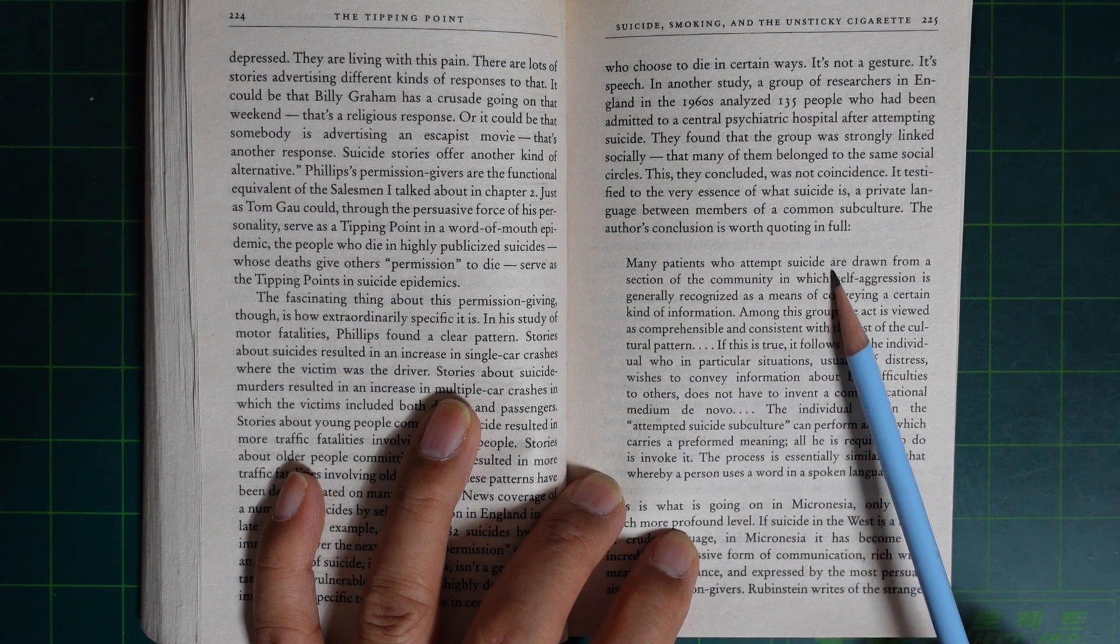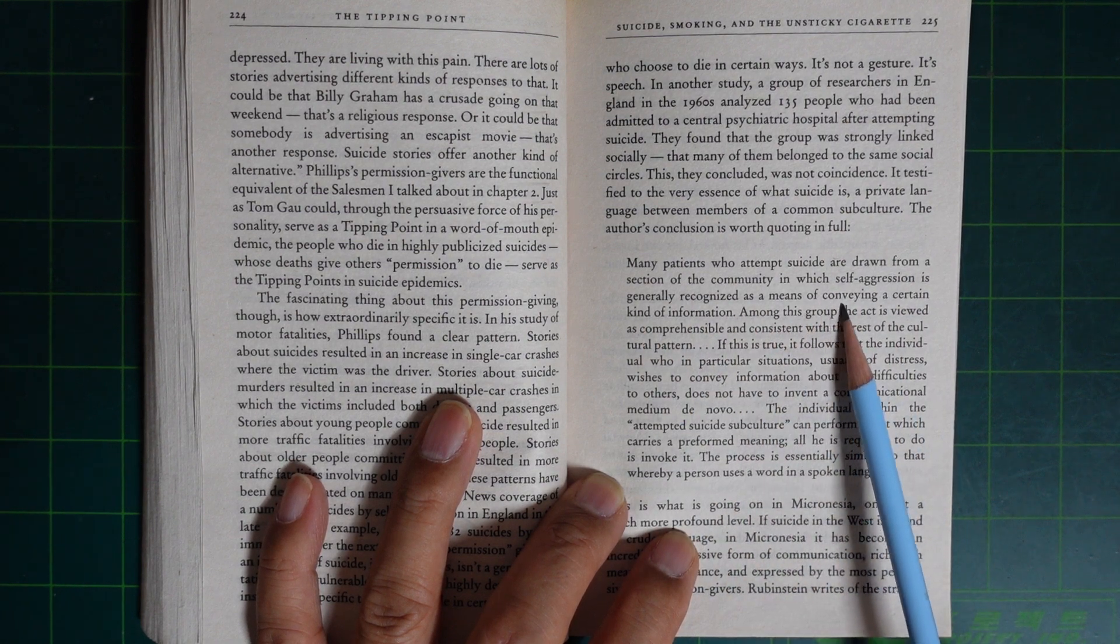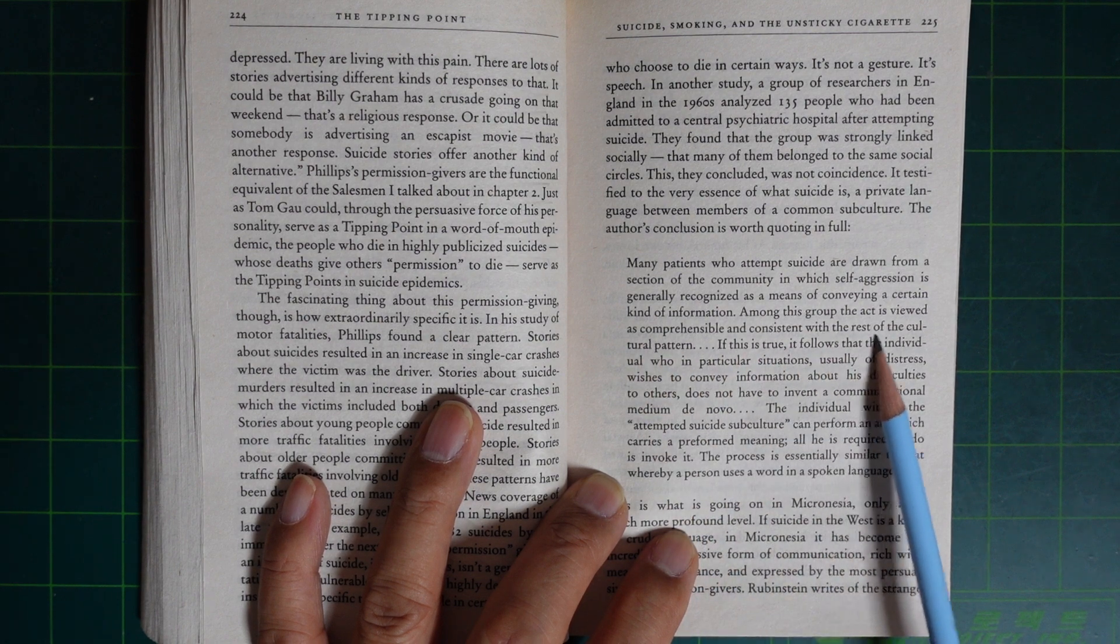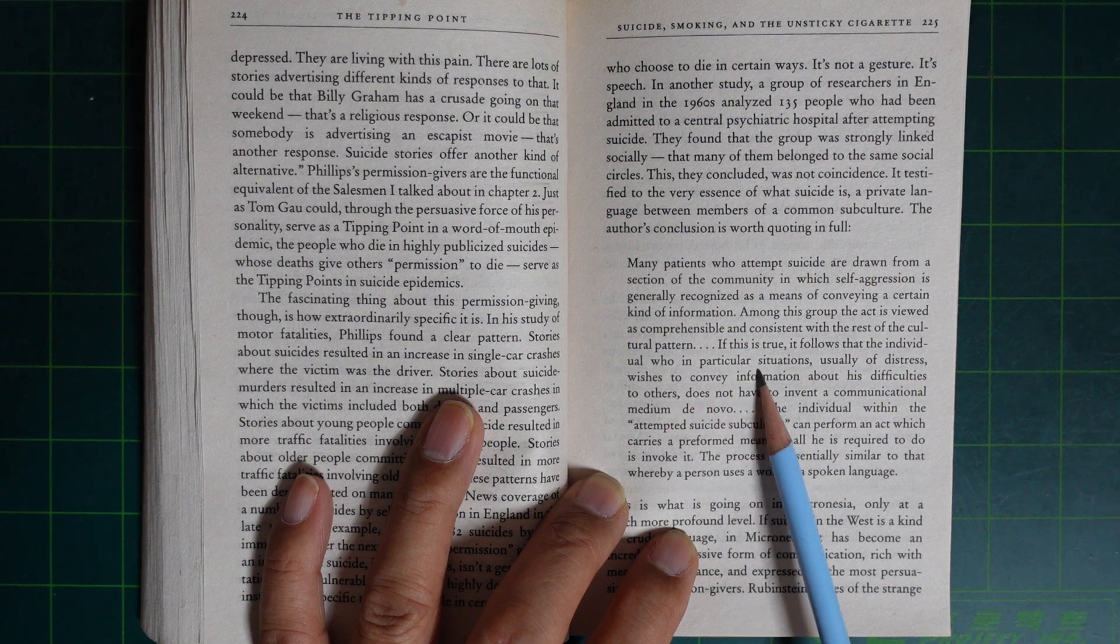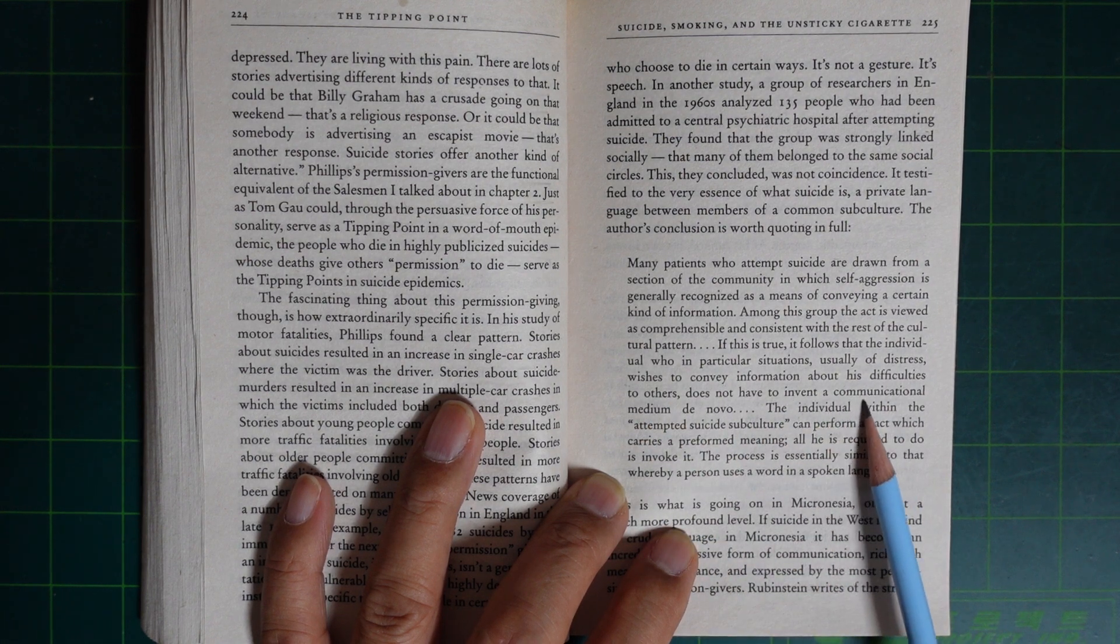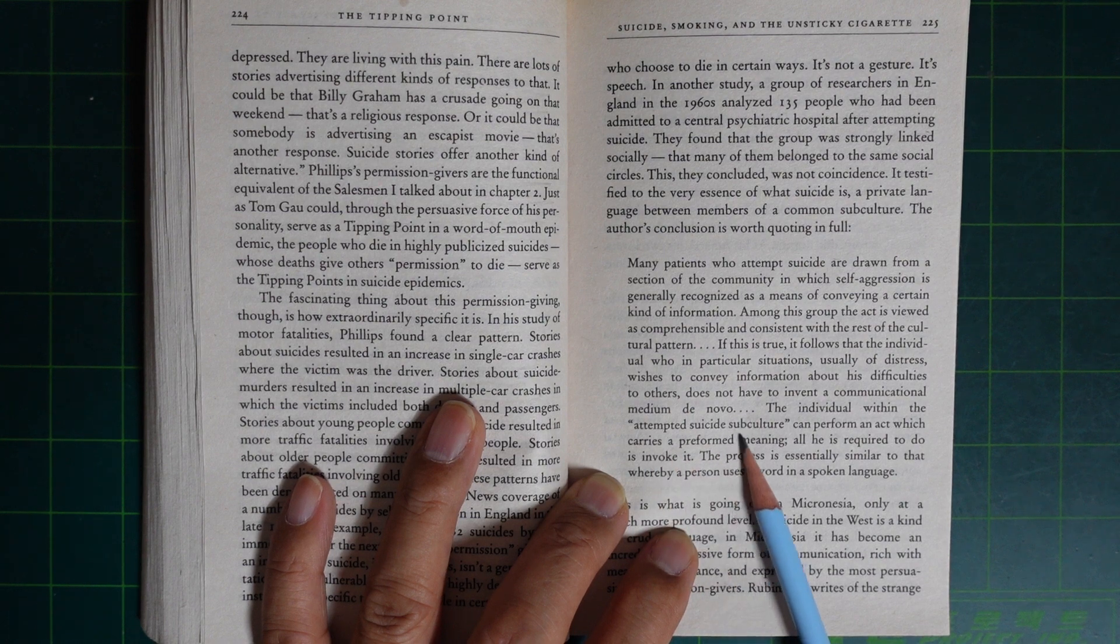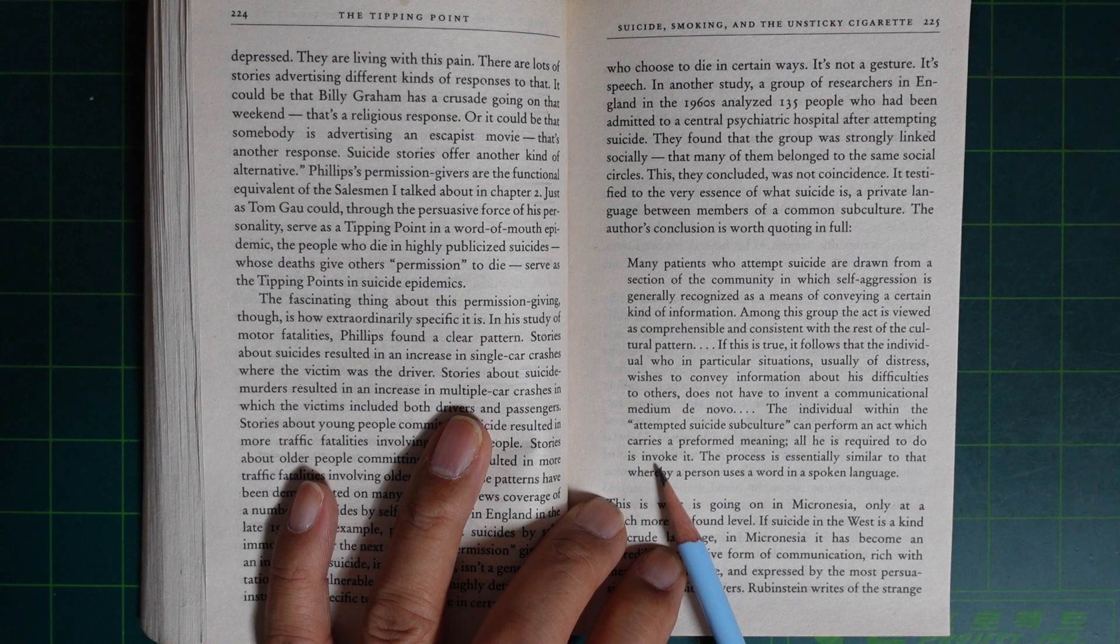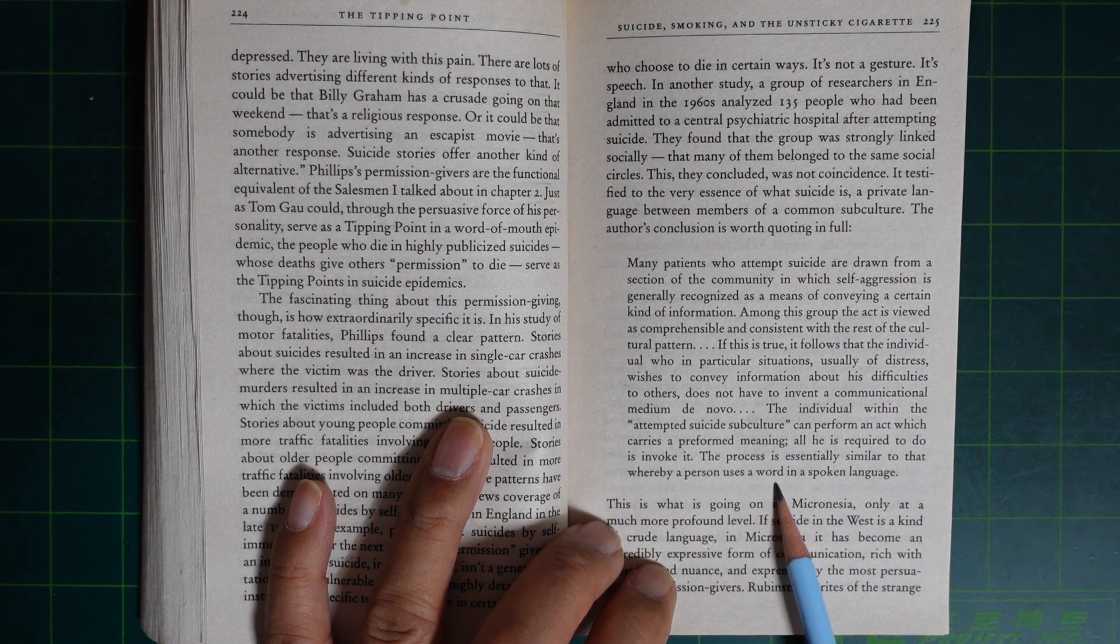Many patients who attempt suicide are drawn from a section of the community in which self-aggression is generally recognized as a means of conveying certain kinds of information. Among this group, the act is viewed as comprehensible and consistent with the rest of the cultural pattern. If this is true, it follows that the individual whose particular situation, usually of distress, wishes to convey information about these difficulties to others, does not have to invent a communicational medium de novo. The individual within the attempted suicide subculture can perform the act which carries a preformed meaning. All he is required to do is invoke it. The process is essentially similar to that by a person using a word in a spoken language.